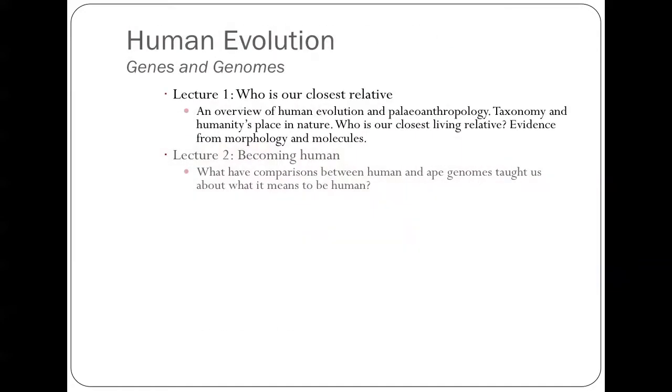So there's two lectures in my set of teaching here. The first lecture is going to be on who's our closest relative, and the second one will be looking at what comparisons between human and ape genomes have told us about what it means to be human. So the first one is kind of a gentle introduction and looking at the evidence before we actually had a full human genome and a full chimp and orang and gorilla genome to compare.